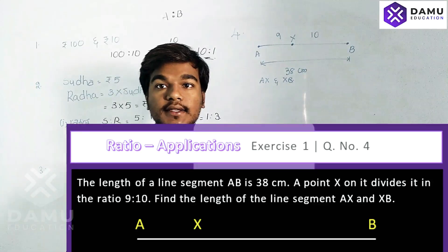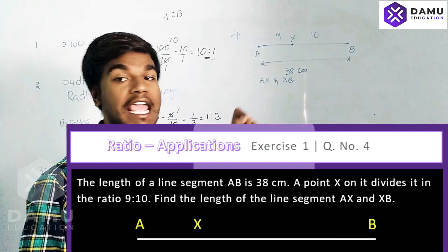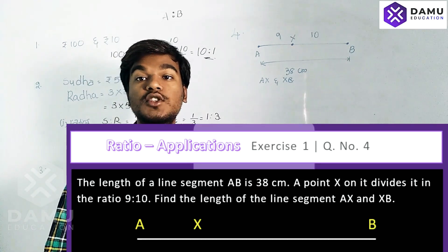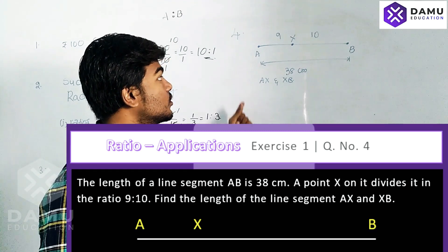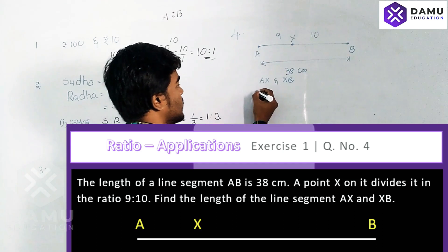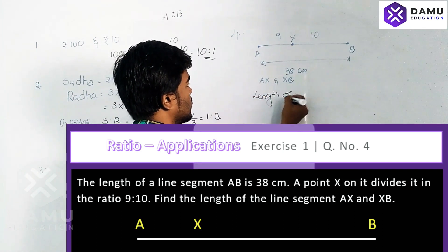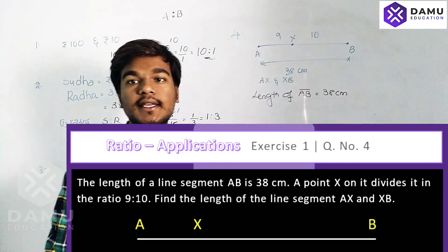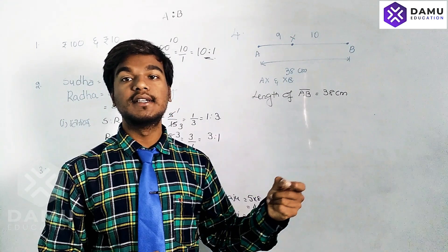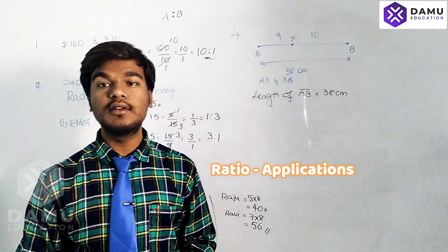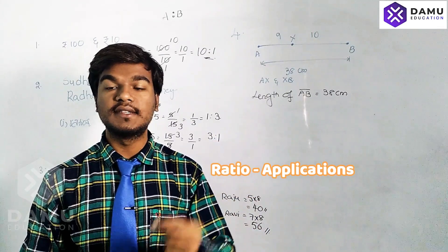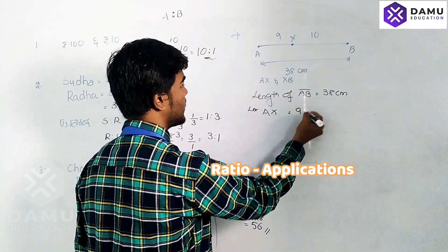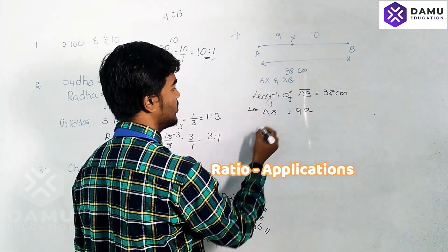The next question: we have a line segment AB, and X is a point that divides the line segment AB in the ratio of 9 is to 10. The total length of line segment AB is 38 centimeters. In ratio and applications, when a ratio is given, we multiply both ratio parts by some constant. So let AX equal 9a and XB equal 10a.